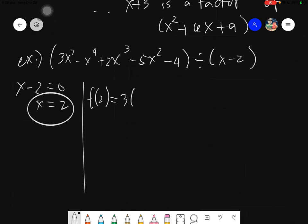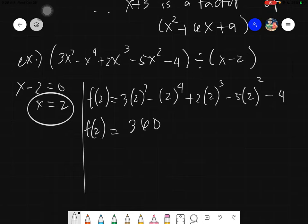And again, substitution. 3 times 2 raised to 7 minus 2 raised to 4 plus 2 times 2 cube minus 5 times 2 squared and minus 4. Evaluating this, let me get my calculator. It will be 3 times 2 raised to 7 minus 2 raised to 4, and we have plus 2 times 2 cube, and we have minus 5 times 2 squared, and we have minus 4.